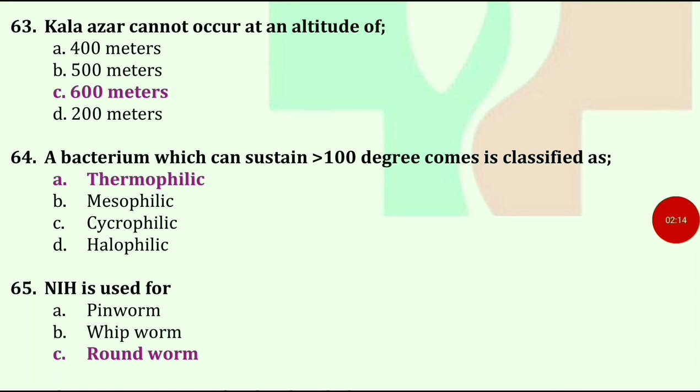Kala-azar cannot occur at an altitude of — options are 400 m, 500 m, 600 m, or 200 m. The answer is 600 meters.